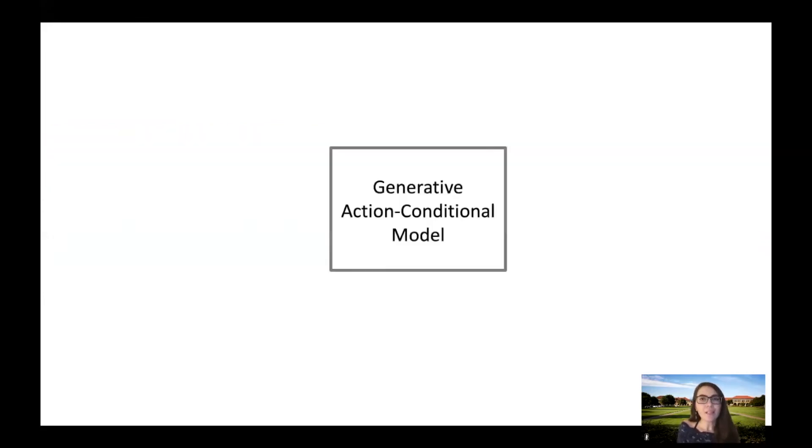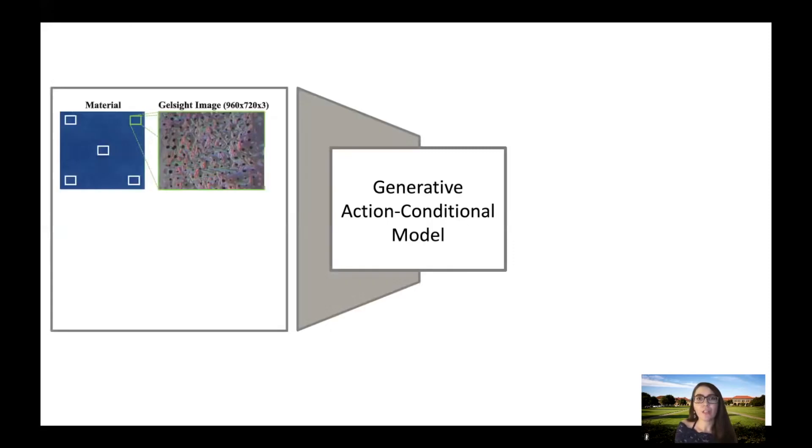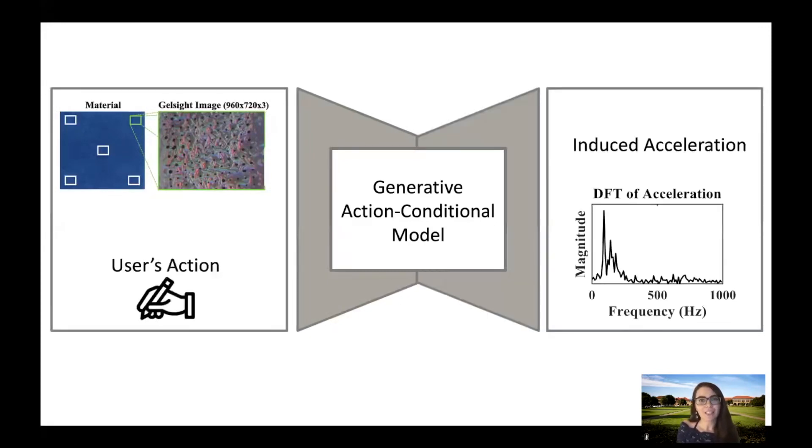In this work, we are interested in generating haptic texture feedback signals using a deep learning-based generative action-conditional model. Our model uses data from a vision-based tactile sensor gel site and users' action as input, and predicts an induced acceleration.